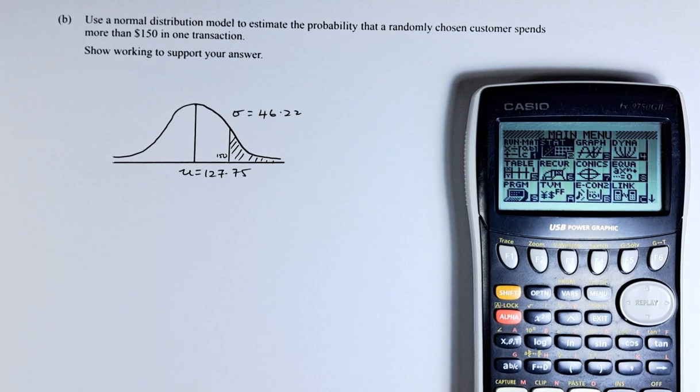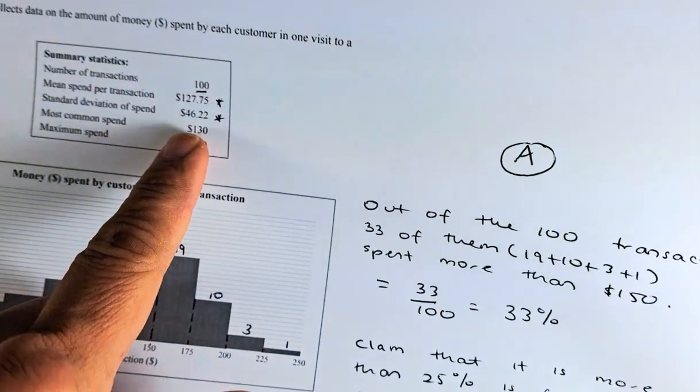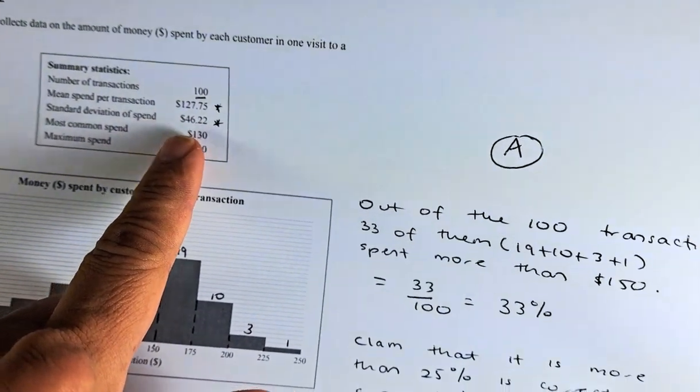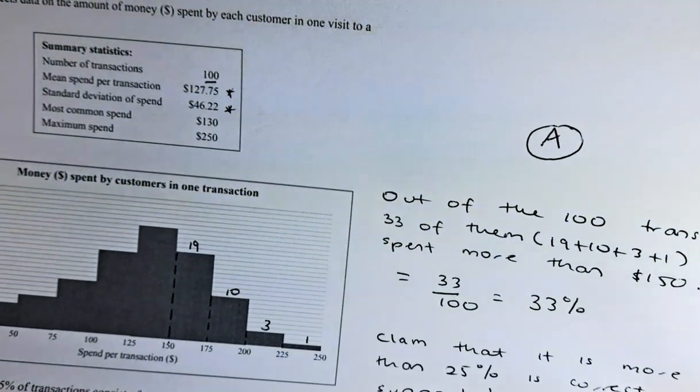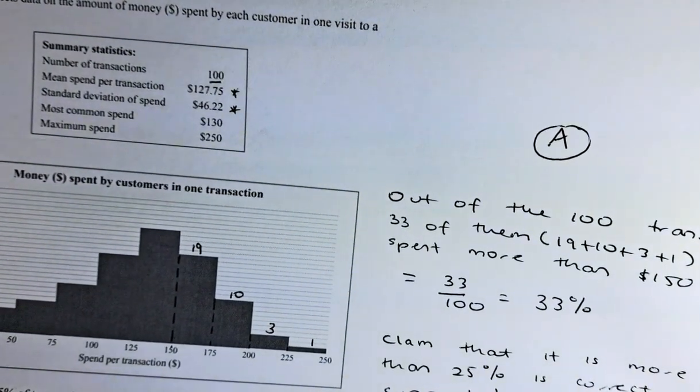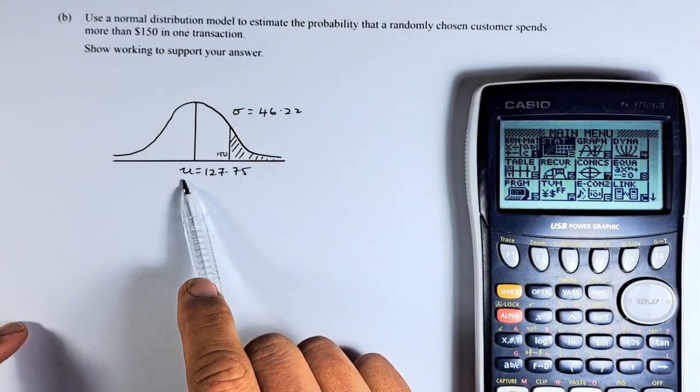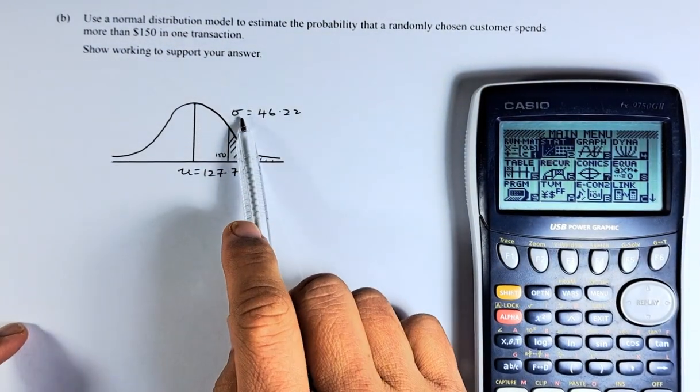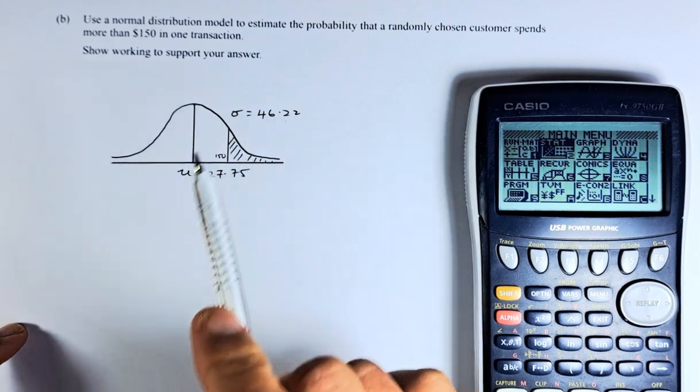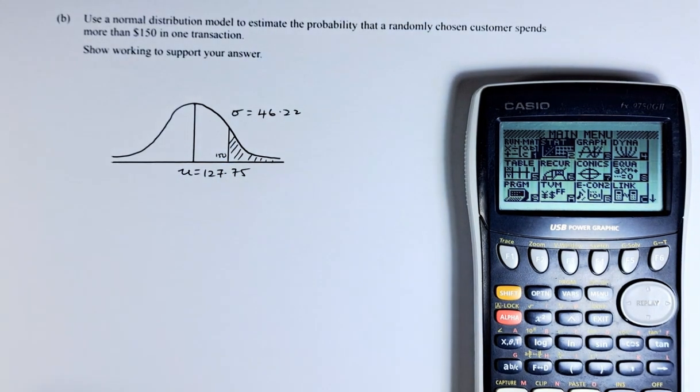Now, because in the example, we're going to drill the example again. The mean and standard deviation is given. The mean is going to be $127.75. And standard deviation is $46.22. So we're going to transfer that. So the mean μ is $127.75, and the sigma σ, the standard deviation, is $46.22.